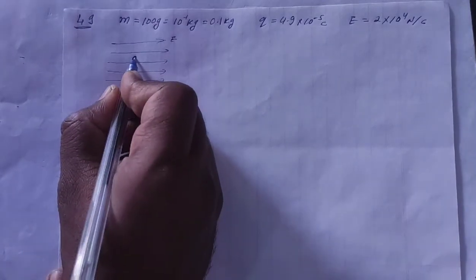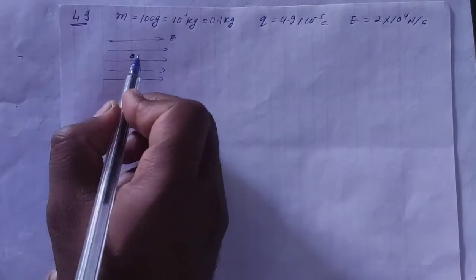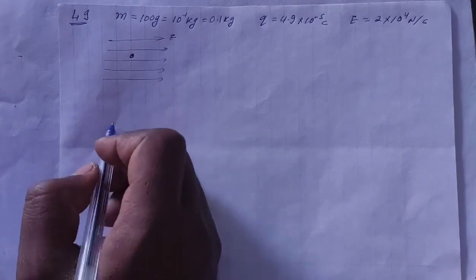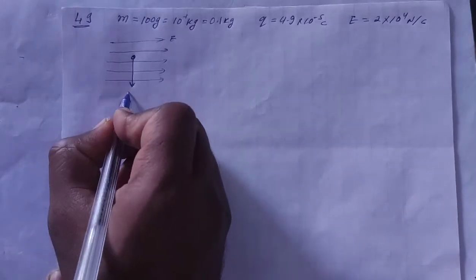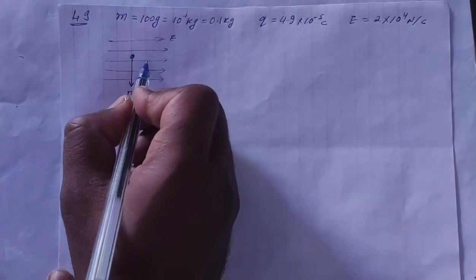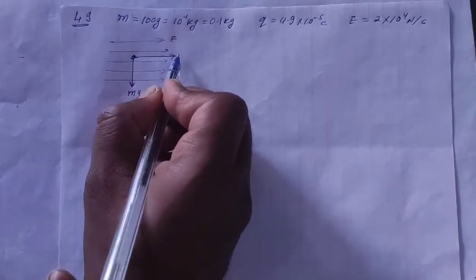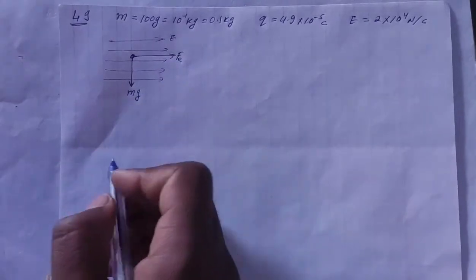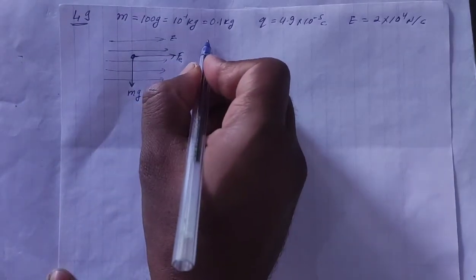So, first of all, mass is M, which is electric field, horizontal electric field. So, this is the net force. So, mass has the gravitational force Mg. And positive charge is the direction of the field, which is the electric force. These two forces. So, first of all, we have part A to solve.